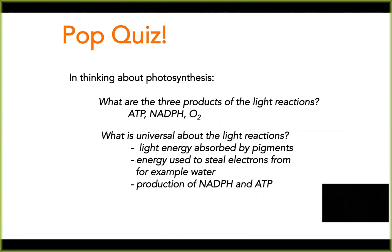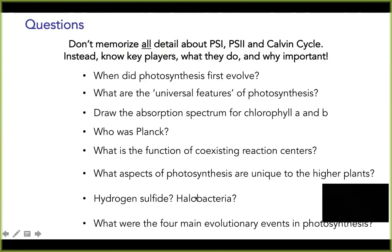I would like you to think about what the three products of the light reactions are — this goes back to our pop quiz. The three products include ATP, NADPH, and oxygen. What's universal about the light reactions: light energy is absorbed by chlorophyll-containing pigments, this energy is used to steal electrons from a molecule — mainly water, though not always — and we have the production of NADPH and ATP.